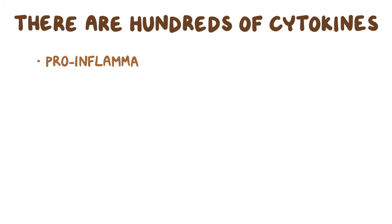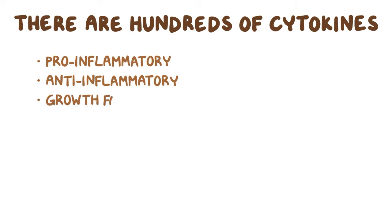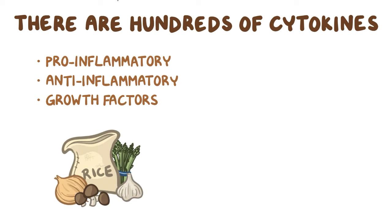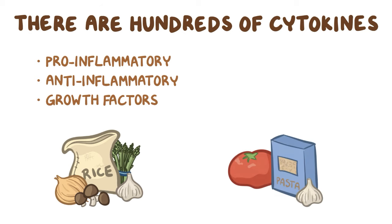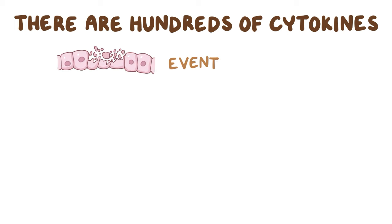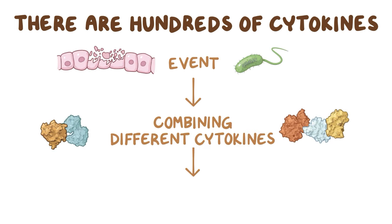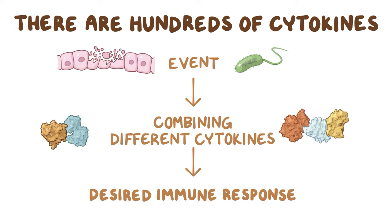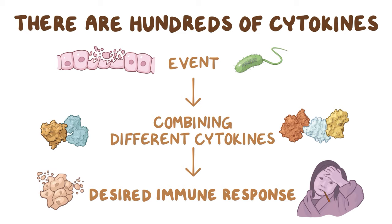So broadly speaking, there are hundreds of cytokines. Some are pro-inflammatory, some are anti-inflammatory and regulate the immune response, and some are growth factors. It's kind of like cooking, where each cytokine is like an ingredient. One meal might call for onions, garlic, asparagus, mushrooms, and rice, whereas another meal might call for garlic, tomatoes, and pasta. Ultimately, in response to an event like damage or infection, we're combining different cytokines to get the desired immune response. And that's why you'll see one cytokine included in different pathways, each one resulting in a different immune response.